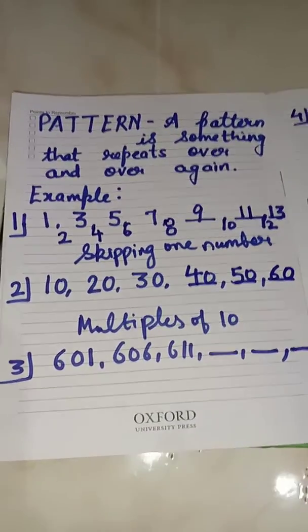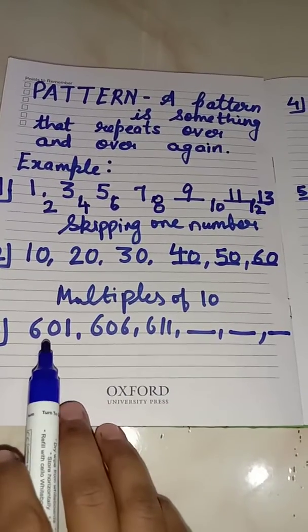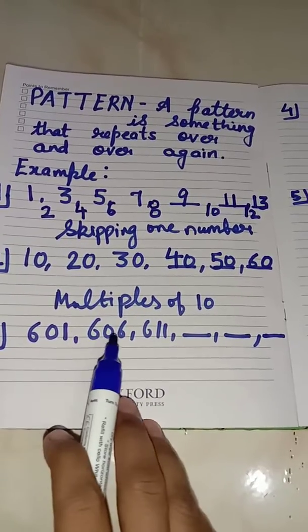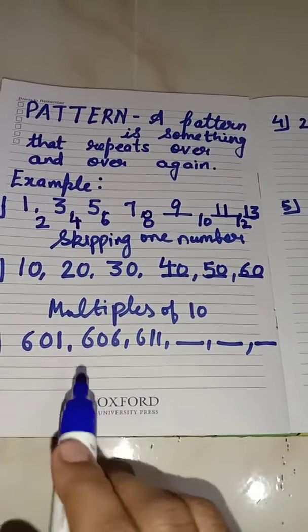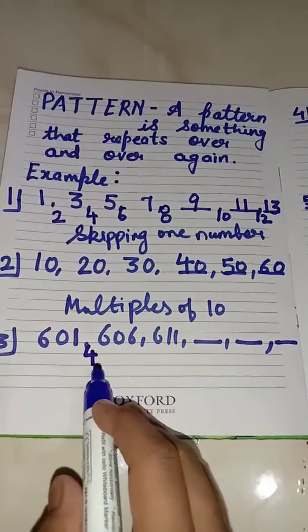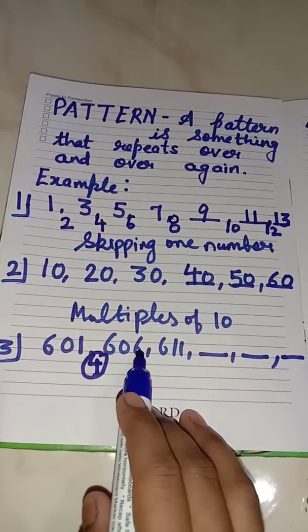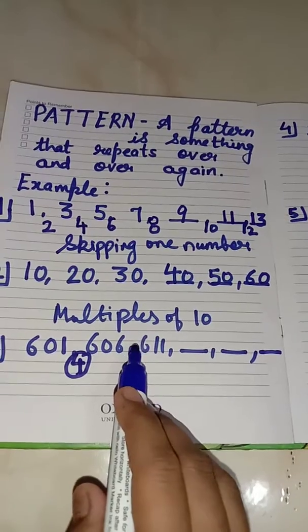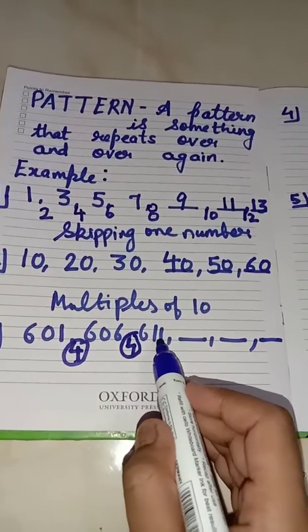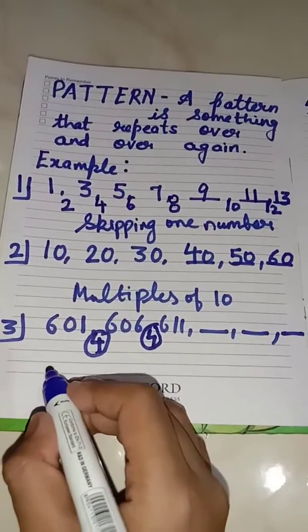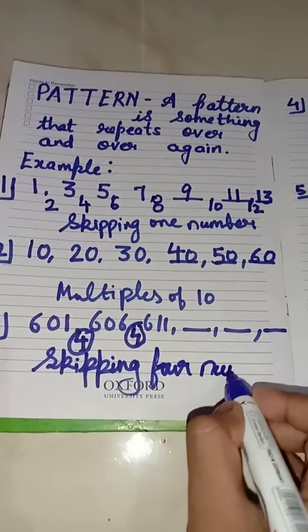Now come to the next question: 601, 606, and 611. After 601 we have written 606. After 601 comes 602, 603, 604, and 605 — it means we have skipped 4 numbers. Then we have written 606. After 606 comes 607, 608, 609, and 610 — again we have skipped 4 numbers. And we have written 611. So which pattern is following here? Skipping 4 numbers.